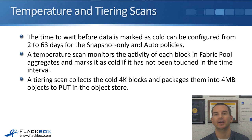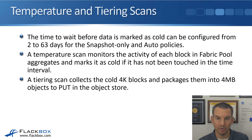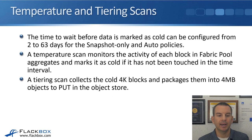The time to wait before data is marked as cold and moved to the capacity tier can be configured from 2 to 63 days for the snapshot-only and auto policies. A temperature scan monitors the activity of each block in Fabric Pool aggregates at the block level, marking blocks as cold if they haven't been touched within the configured interval. A tiering scan then collects those cold 4K blocks and packages them into 4MB objects to put into the object store.